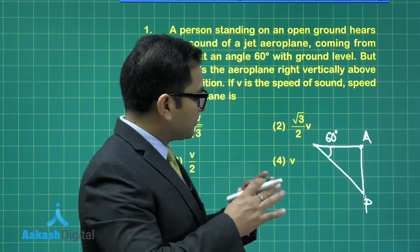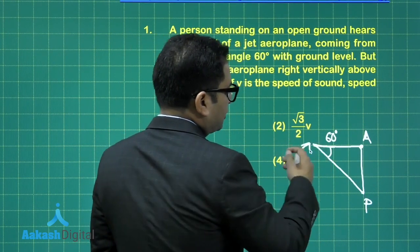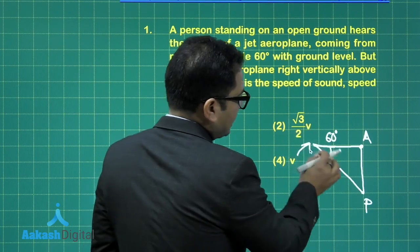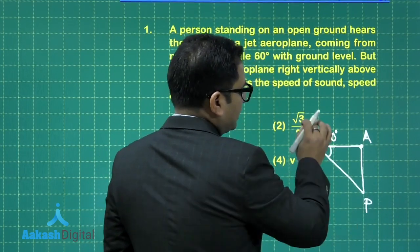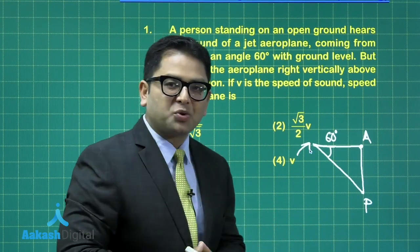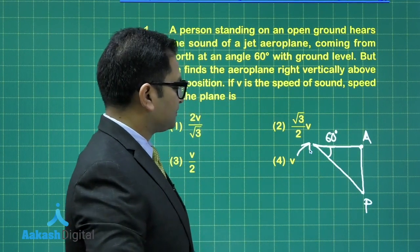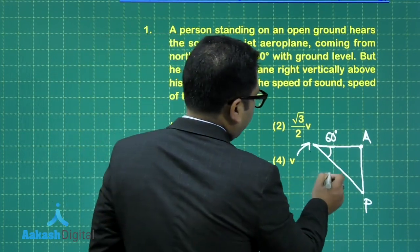Let me repeat it again. Initially the airplane was here, it produced a sound. By the time the sound reaches the person, the airplane exactly reaches here. So that's a basic concept. That's why the person hears the sound coming from this direction and finds the airplane vertically upward.